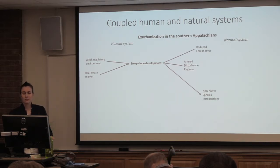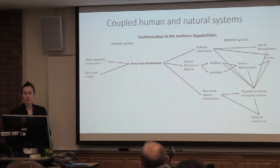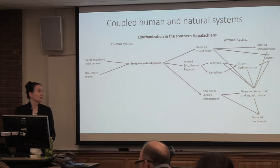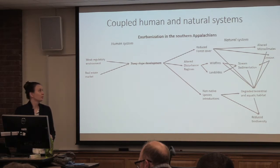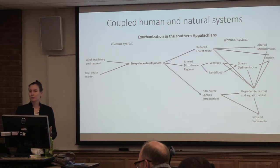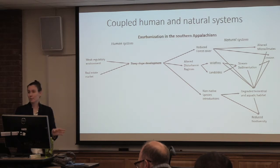We know that steep slope development affects forest cover — it reduces it because forests are cleared to develop houses and put in roads. It creates altered disturbance regimes and can lead to non-native species introductions. Reduced forest cover is creating altered microclimates — when you remove the forest, the soil dries faster. It also produces erosion and directly degraded terrestrial and aquatic habitat. The altered disturbance regimes include fire suppression — there was a pretty severe drought recently that led to really awful wildfires because of high fuel loads from suppressed fire conditions.